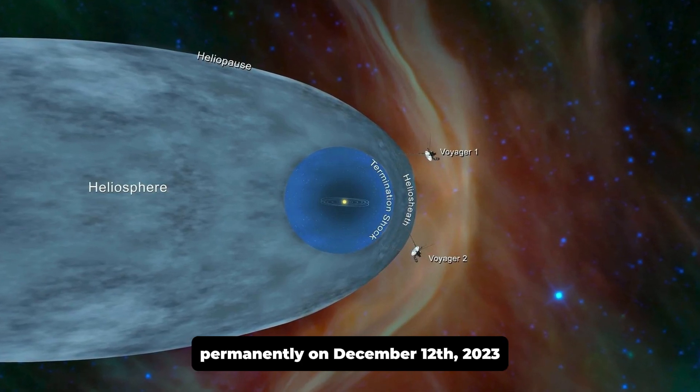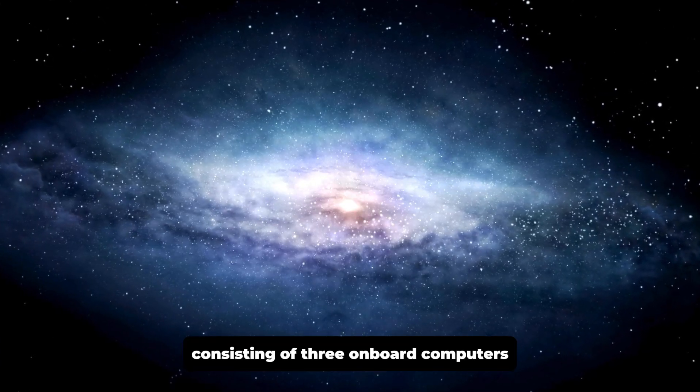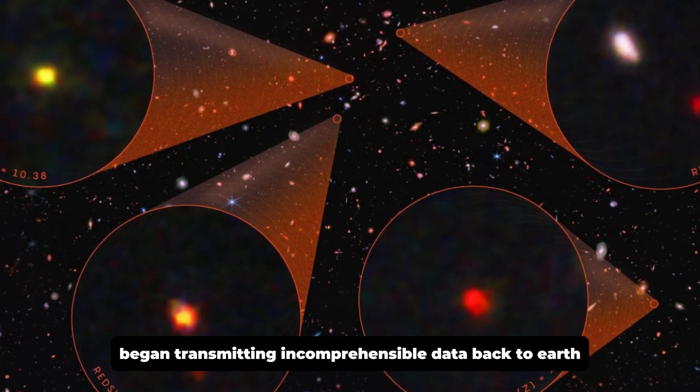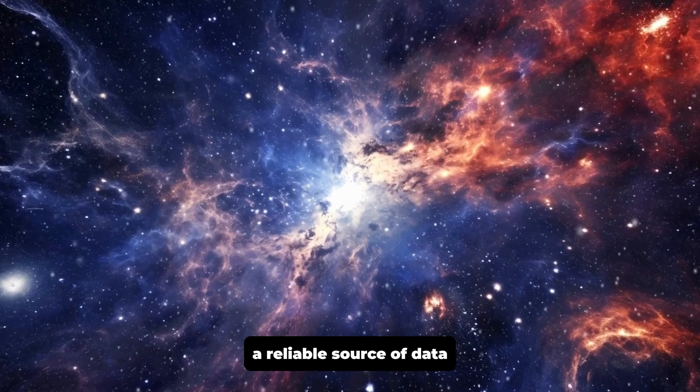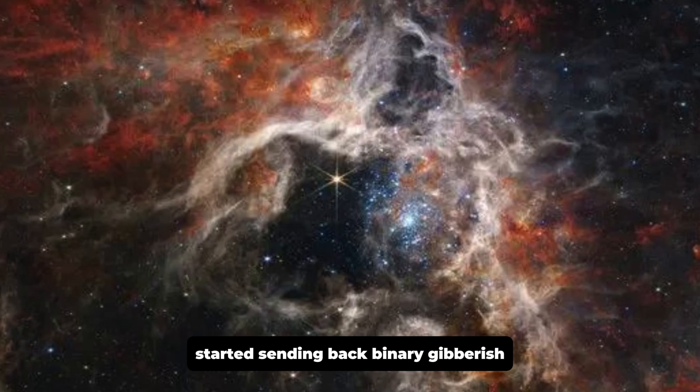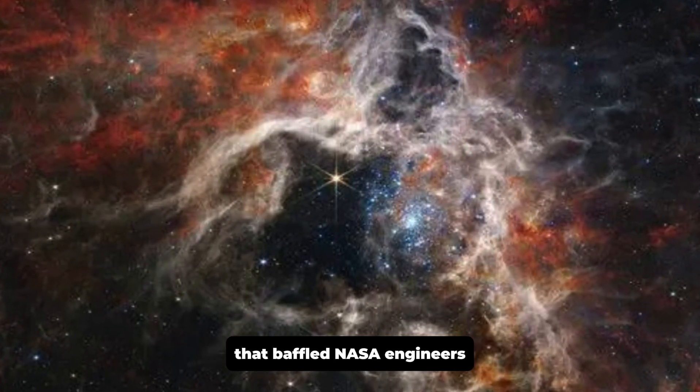On December 12th, 2023, the flight data system aboard Voyager 1, consisting of three onboard computers, began transmitting incomprehensible data back to Earth. The spacecraft, typically a reliable source of data from the furthest reaches of our solar system, started sending back binary gibberish, an unending stream of ones and zeros that baffled NASA engineers.